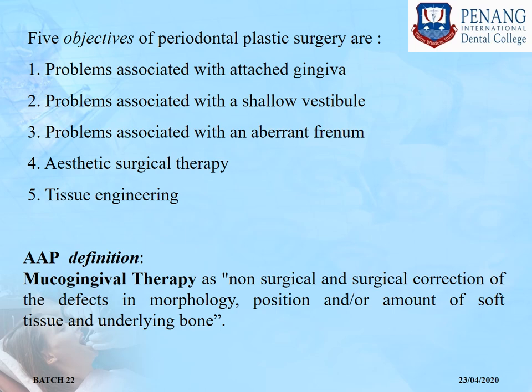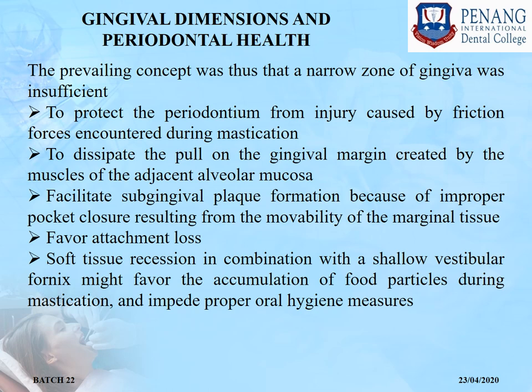The five objectives of periodontal plastic surgery are: problems associated with attached gingiva, problems associated with shallow vestibules, problems associated with aberrant frenula, aesthetic surgical therapy, and tissue engineering. The AAP definition of mucogingival therapy is non-surgical and surgical correction of defects in morphology, position, and/or amount of soft tissue and underlying bone. The adequate width of gingiva is that which is compatible with gingival health and prevents retraction of the gingival margin during movements of the alveolar mucosa.